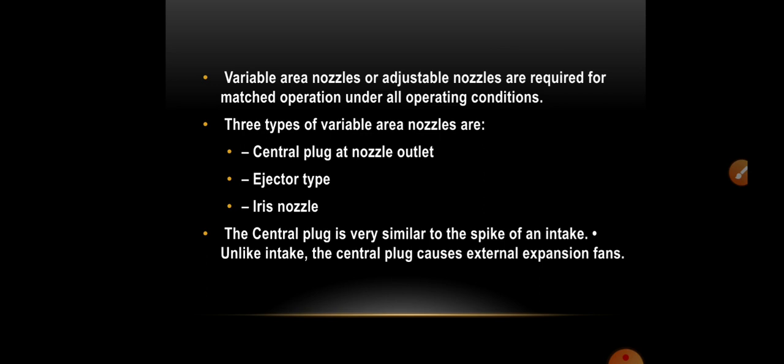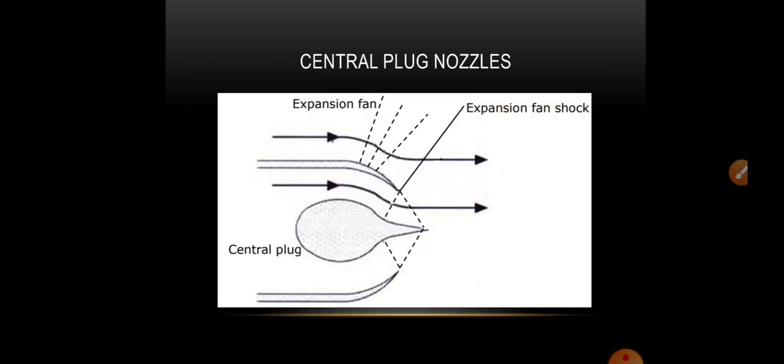The three types are: central plug at nozzle outlet, ejector type, and iris nozzle. The central plug is very similar to the spike of an intake. Unlike an intake, the central plug causes an external expansion fan.